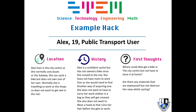Alex lives in the city center so she normally uses buses or the subway. She can cycle a bike but does not own one of her own. Normally she's traveling to work or the shops, so she does not want to get wet in the rain. Alex is a confident cyclist but has not owned a bike since she moved to the city. She does not have room to store one, and she does not want to carry her work clothes in a bag as they will get creased.